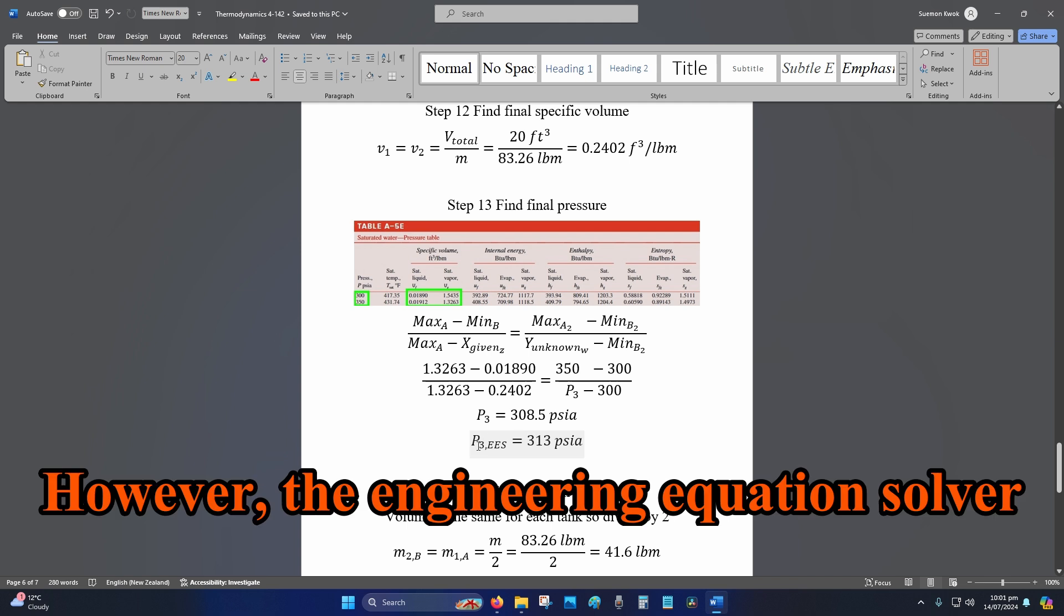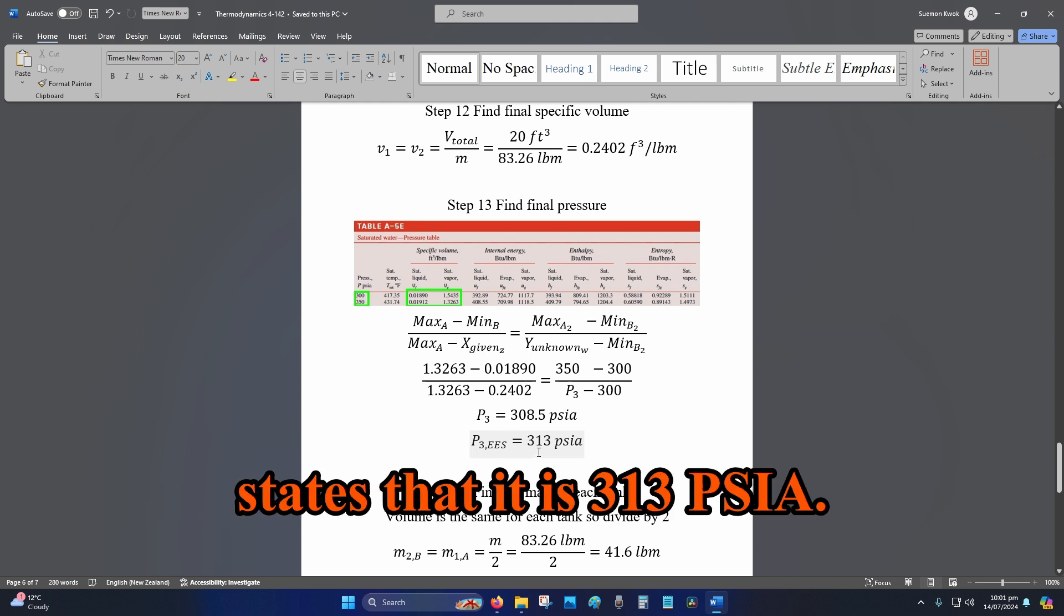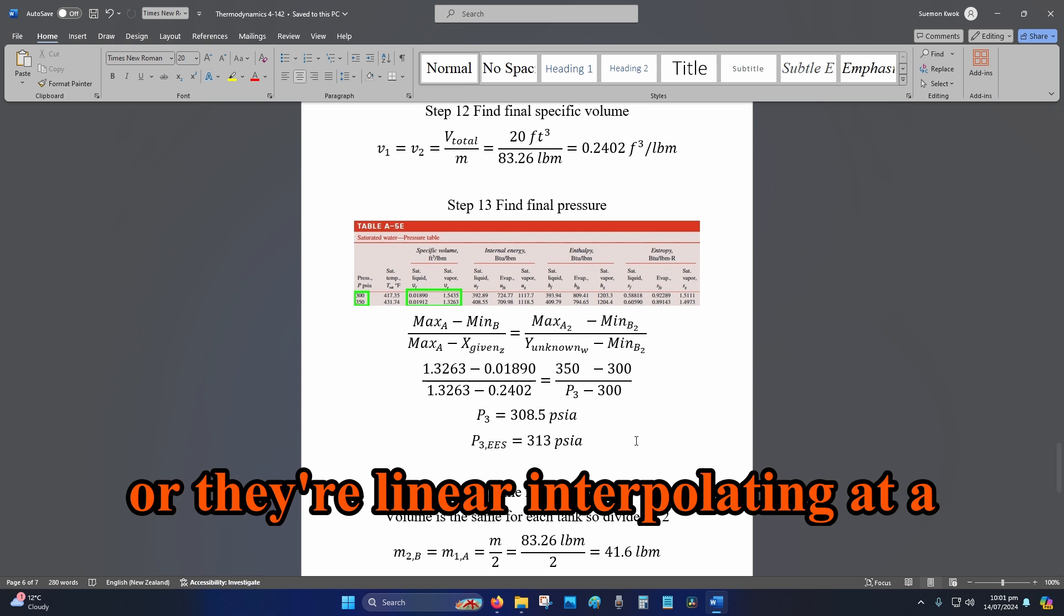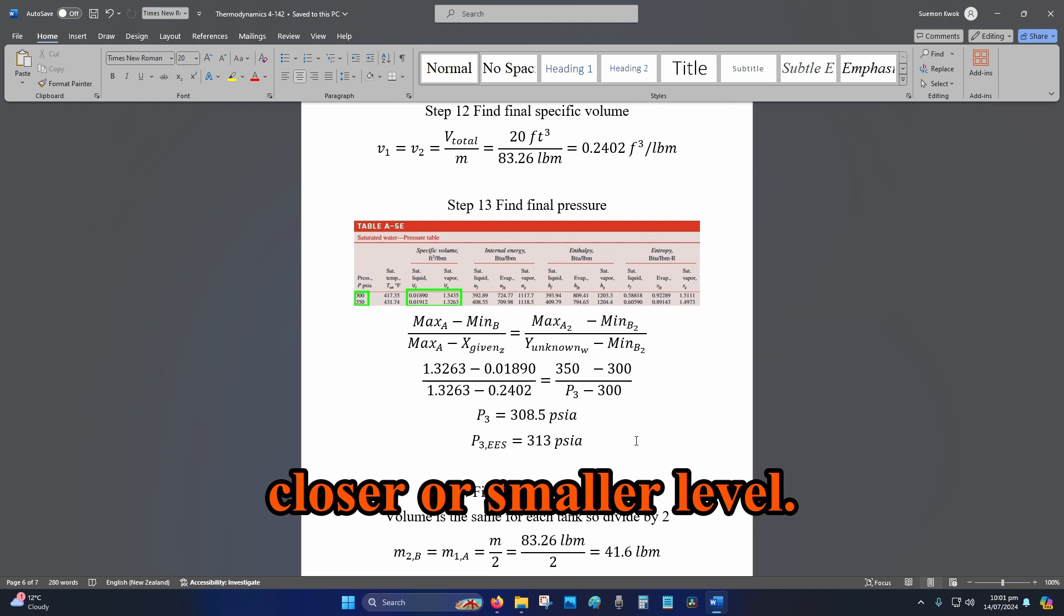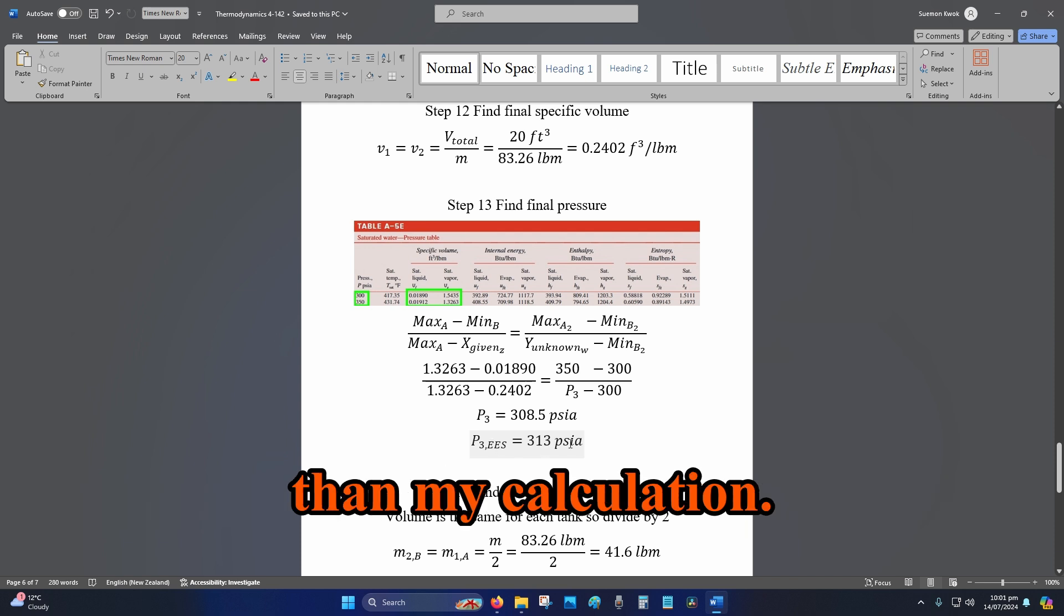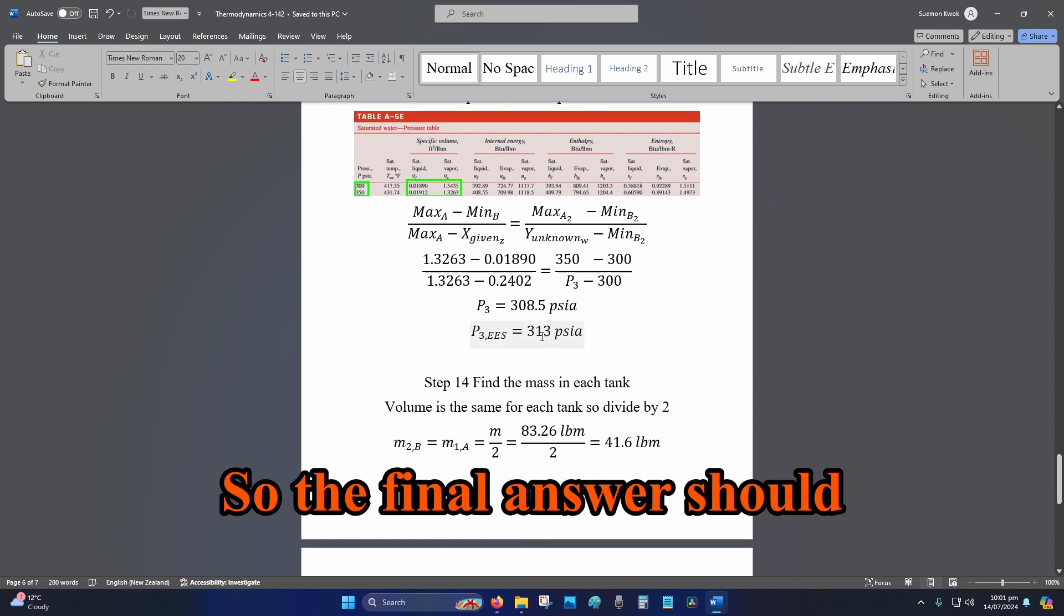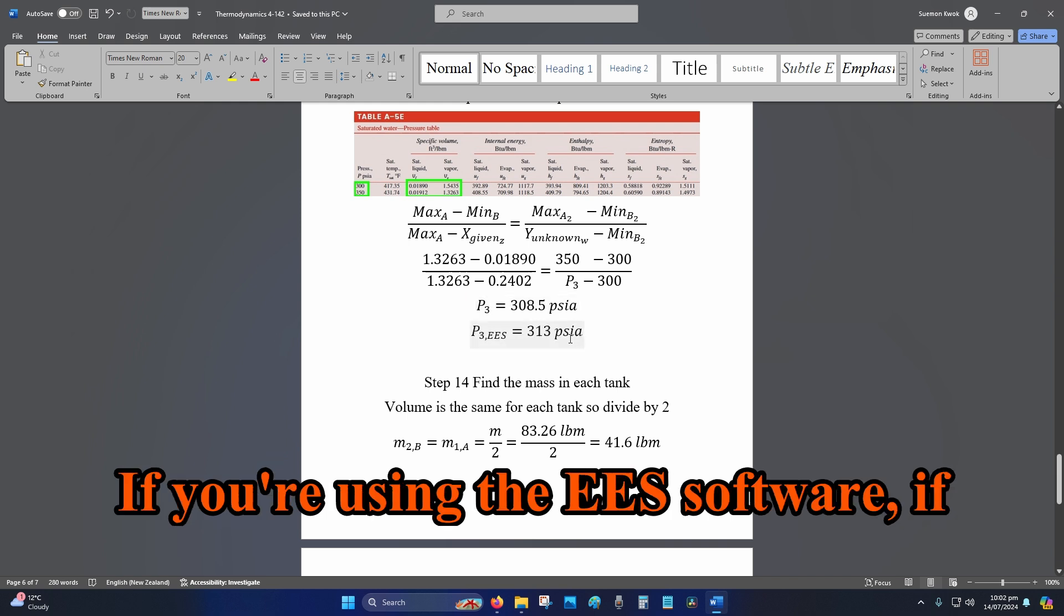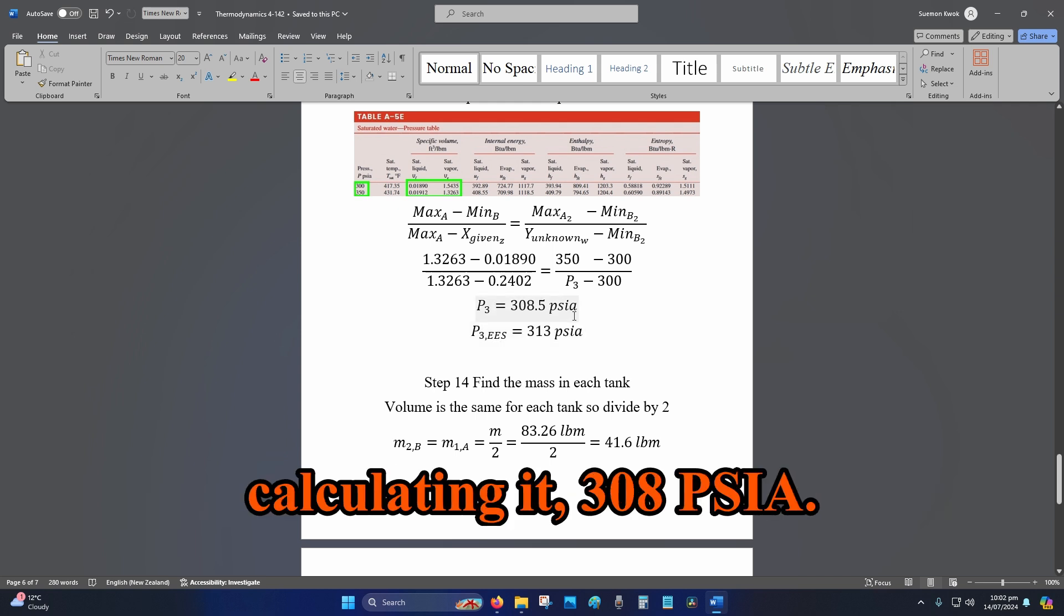However, the engineering equation solver states that it is 313 PSIA. So, either they're using a different table or they're linear interpolating at a closer or smaller level. So, probably believe the software rather than my calculation. So, the final answer should be somewhere around 313 PSIA if you're using the EES software. If you're manually hand calculating it, 308 PSIA.